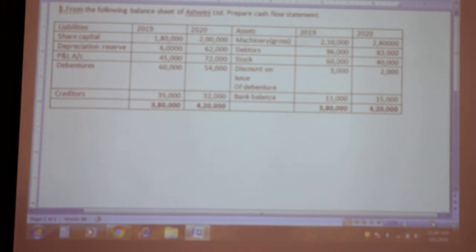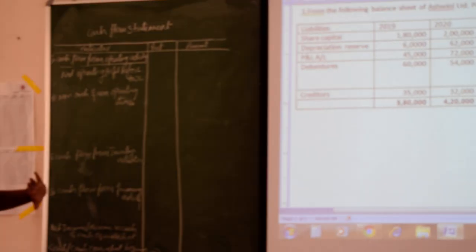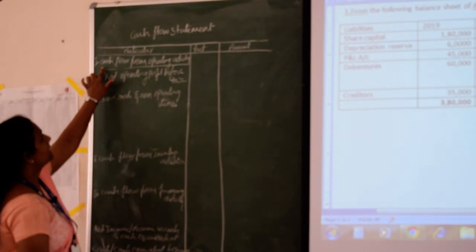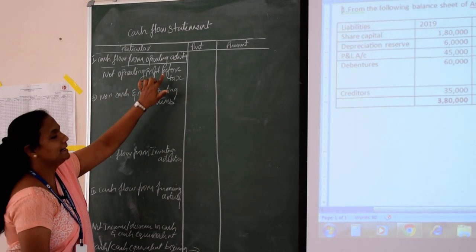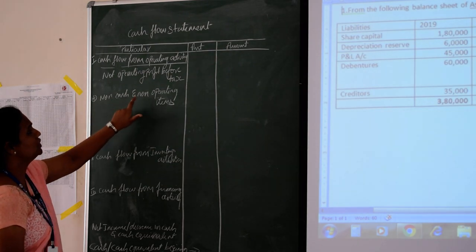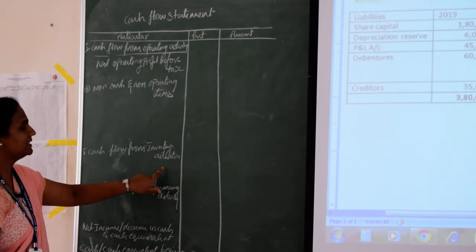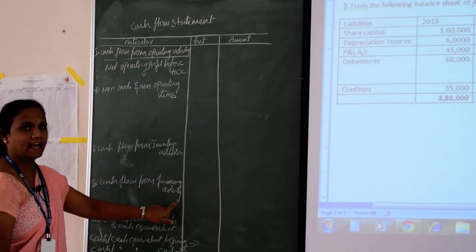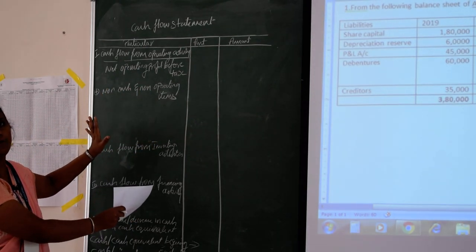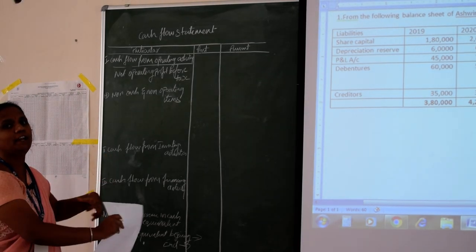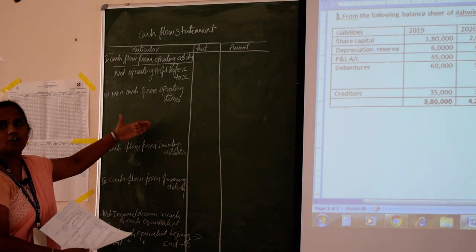First we will set up the format. I have just written the main headings but have not filled in the answers yet. You can see cash flow from operating activities, then net profit before tax, then non-cash and non-operating items, then cash flow from investing activities, then cash flow from financing activities. Now I am going to fill in all the details.